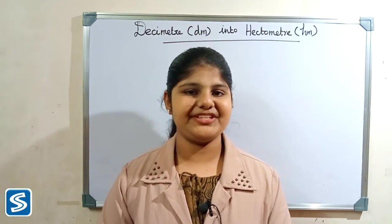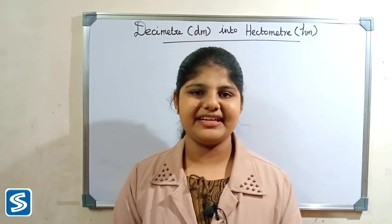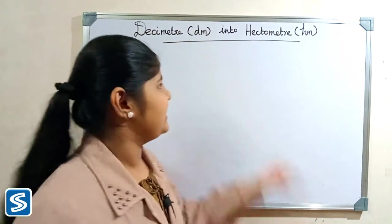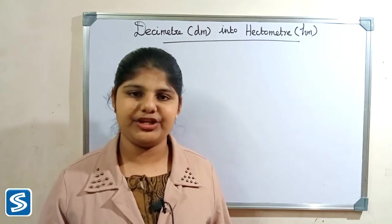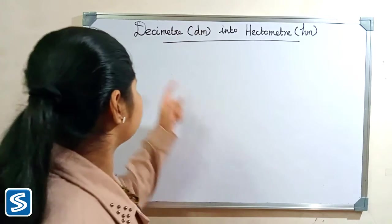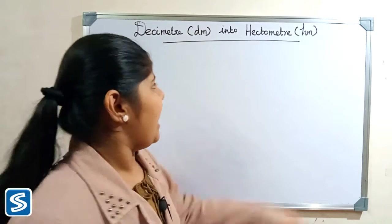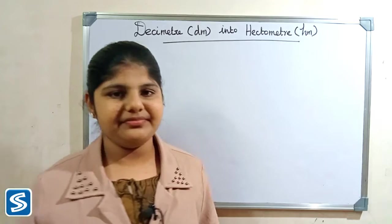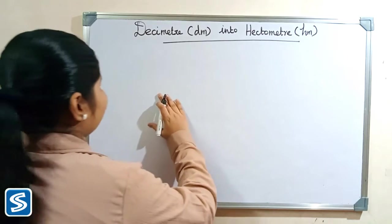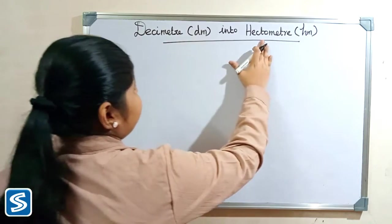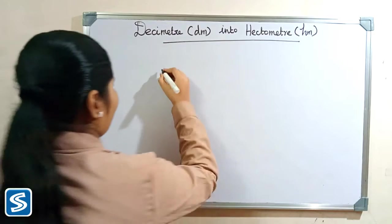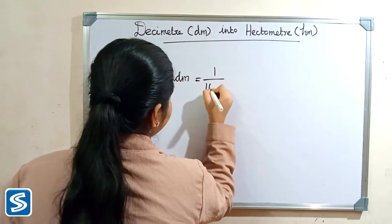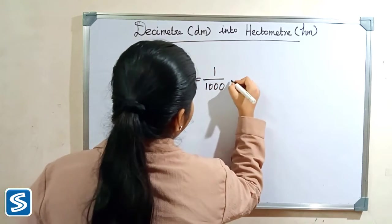Hi friends, welcome to SOM's channel. In this video I'm going to teach how to convert decimeter into hectometer. Decimeter and hectometer are units of length. The short form of decimeter is dm and the short form of hectometer is hm. The formula for converting decimeter into hectometer is: one decimeter is equal to one by thousand hectometer.